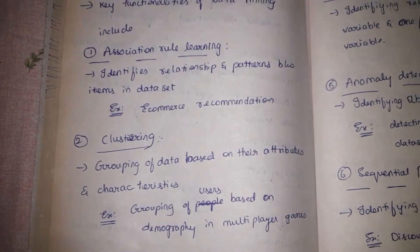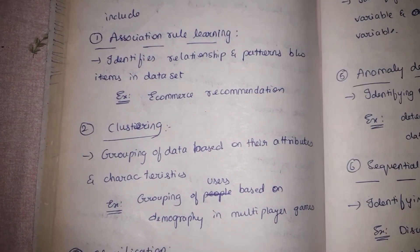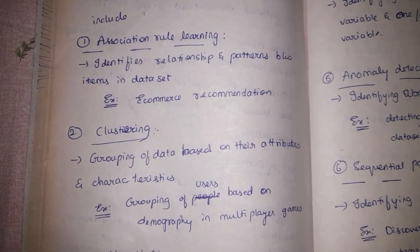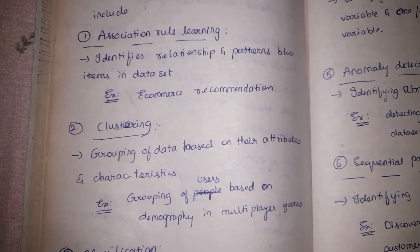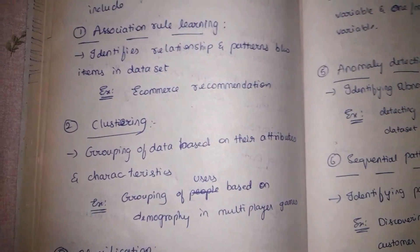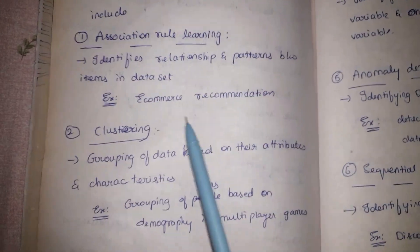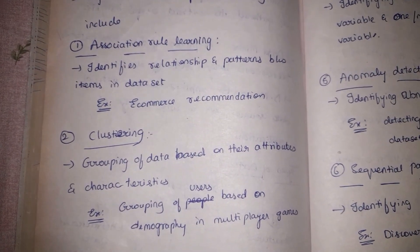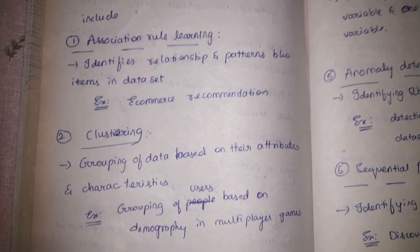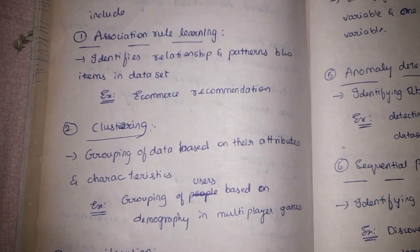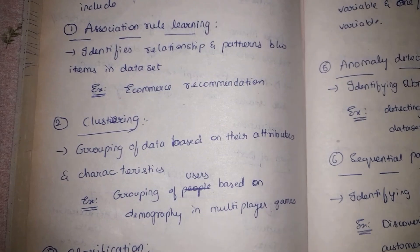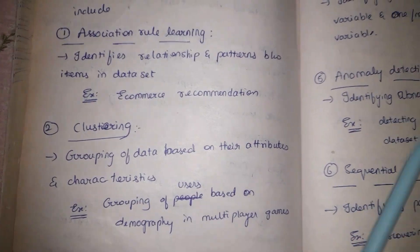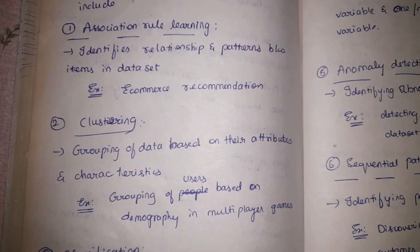Association simply means how items are related to each other. A real-time example is the recommendation system of e-commerce websites. Whenever you purchase a mobile phone on an e-commerce marketplace, you get similar related products like headphones, chargers, and charging cables.